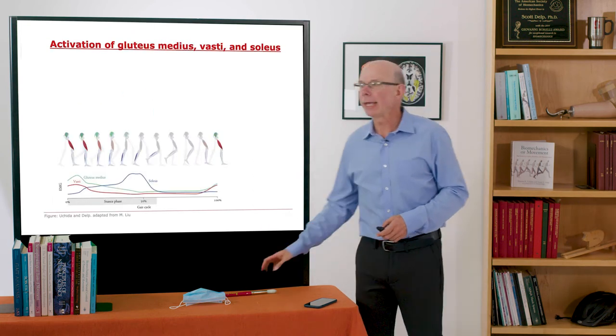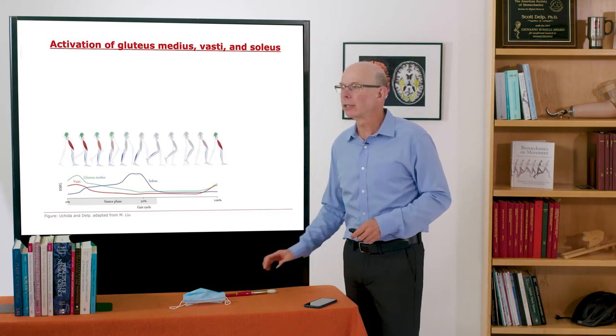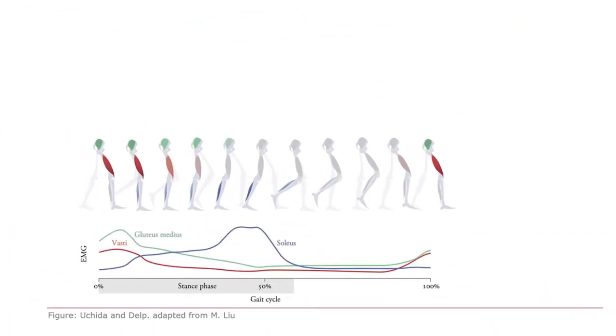Let's first look at the activation of three key muscles: the gluteus medius, the vastae, and the soleus. I'm plotting their activations here, EMG versus percentage of gait cycle. And let's look first at gluteus medius. Now recall that gluteus medius is on the outside of the hip. I'm showing it as green here. Its activation is pretty strong already at the beginning of the stance phase, and then it fades slowly over the stance phase, and it's pretty much off during the swing phase.